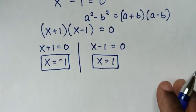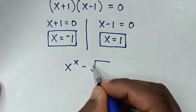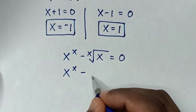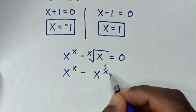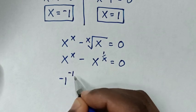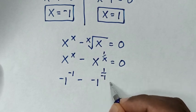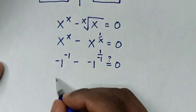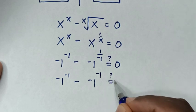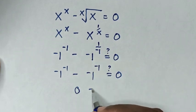Now to check if the values of x are correct, from our problem x power x minus x root of x is equal to 0, which is the same as x power x minus x power of 1 over x is equal to 0. Then we substitute the value x is negative 1: negative 1 power of negative 1 minus negative 1 power of 1 over negative 1 is equal to 0. Since 1 divided by negative 1 is negative 1, it becomes negative 1 power of negative 1 minus negative 1 power of negative 1, which equals 0.